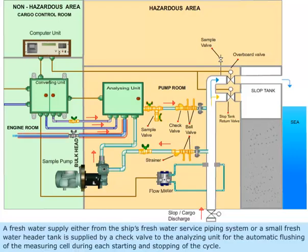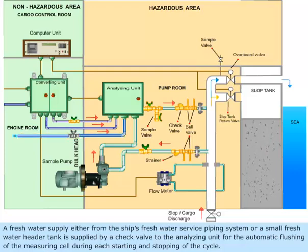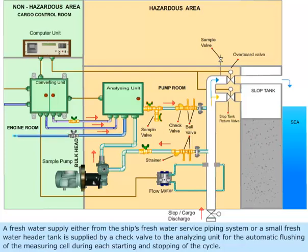Piping for cleaning liquid, flushing water and cable inlets for the intrinsically safe power supply and measuring signals. A fresh water supply, either from the ship's fresh water service piping system or a small fresh water header tank, is supplied by a check valve to the analyzing unit for the automatic flushing of the measuring cell during each starting and stopping of the cycle.